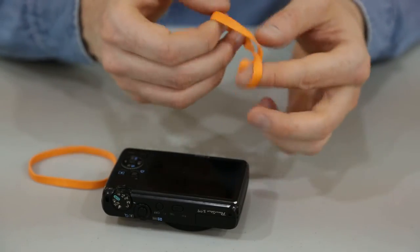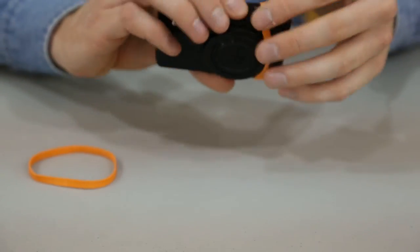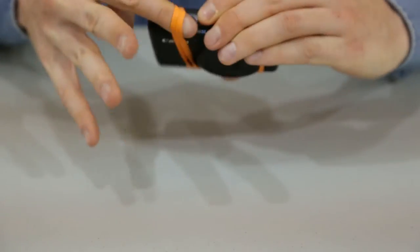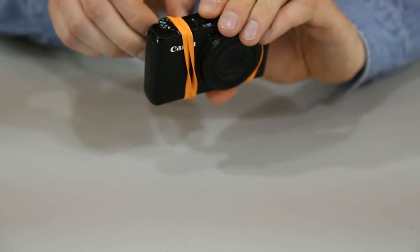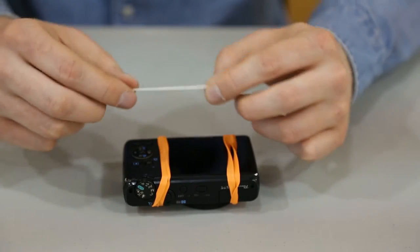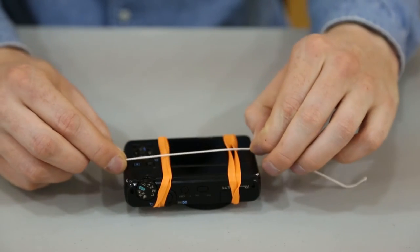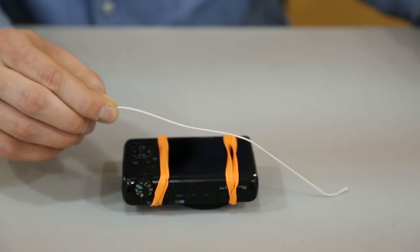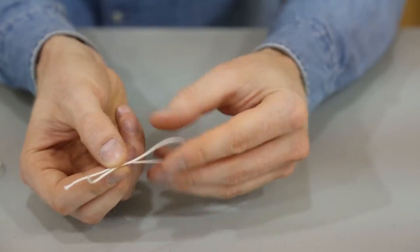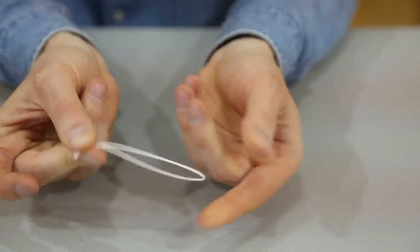First, we'll position the bands on the camera. Double up a rubber band and put one on each side of the camera, avoiding all the menu buttons and the little zoom button. Measure a piece of string twice the length of the camera. Cut it and tie it into a loop. To make a loop, double the string over and tie an overhand knot in the ends.